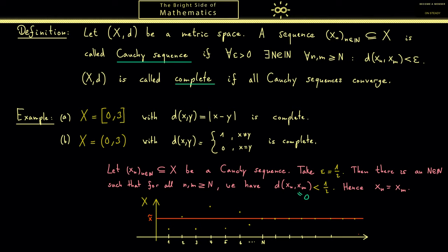And now we have seen that these are indeed the only possible convergent sequences in a discrete metric space. And of course we have also shown that this one is indeed a complete metric space.